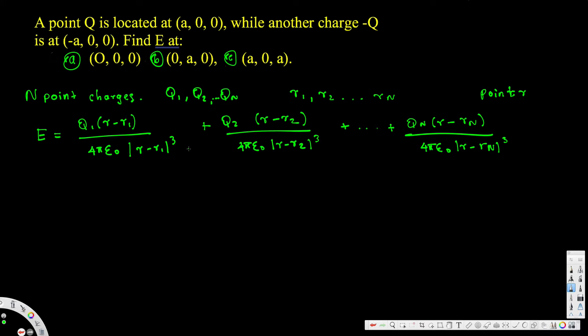You can see the pattern — we use this same formula for each point charge to calculate the electric field. For Part A, we want the field at (0, 0, 0). We have two charges: charge q at (a, 0, 0) and charge negative q at (negative a, 0, 0). Since we have two charges, we apply the formula twice. The location r is (0, 0, 0).